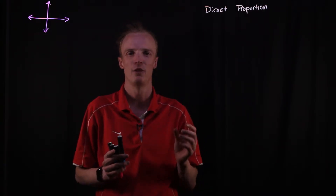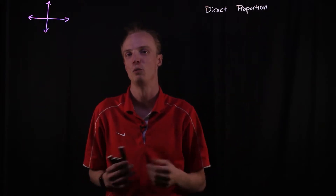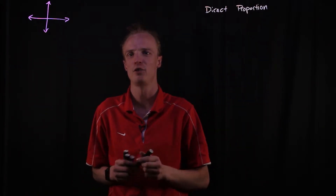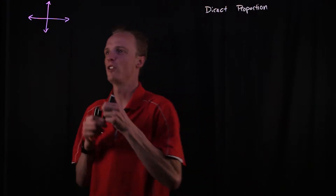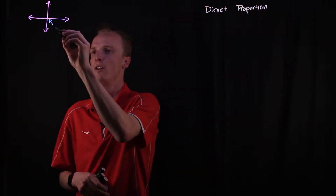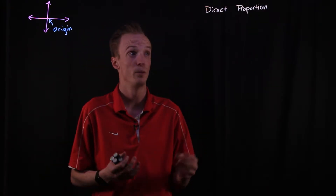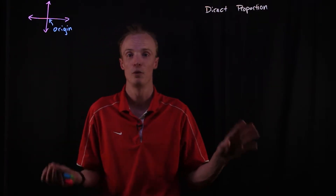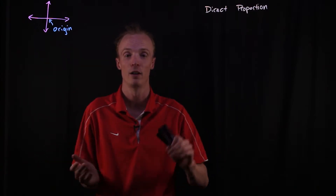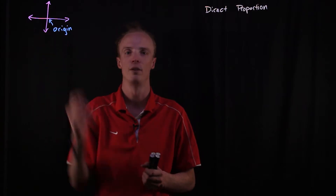What makes a directly proportional relationship special is that it's not only a linear relationship, but it's a linear relationship that passes through the origin. So if we know that two variables are in direct proportion to each other, not only do we know they're linearly related — a straight line relationship — but we also know that it passes through the origin.